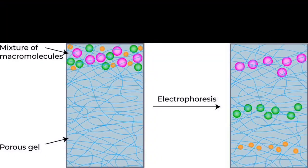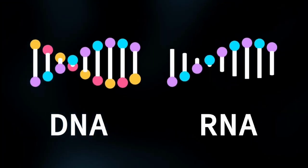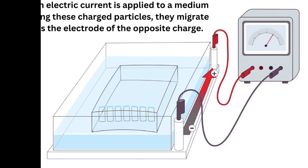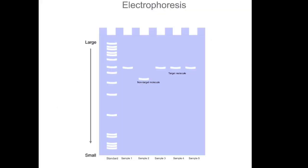The principle of electrophoresis is based on the fact that charged particles, such as DNA, RNA, and proteins, can be influenced by an electric field. When an electric current is applied to a medium containing these charged particles, they migrate towards the electrode of the opposite charge.